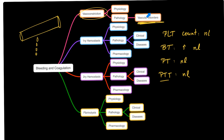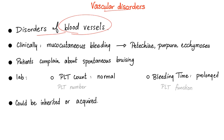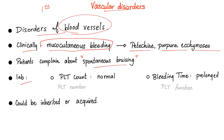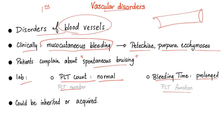What will the symptoms of vascular disorders be? Similar to the symptoms of primary hemostasis disorders: petechiae, purpura, ecchymosis — dark purple patches on the skin because of mucosal bleeding. Vascular disorders are disorders of the blood vessel. Clinically: muco-cutaneous bleeding, petechiae, purpura, ecchymosis, and spontaneous bruising. Lab: platelet count normal, bleeding time could be normal or prolonged. The platelets themselves are functional, but they cannot function alone — they need a good blood vessel.